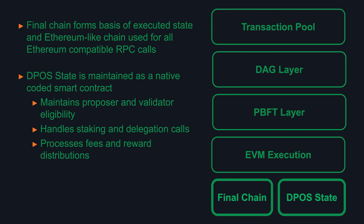Lastly, we produce a final chain and a DPoS state that we maintain. The final chain forms the basis of the executed state and it's an Ethereum-like chain, therefore usable for all Ethereum-compatible RPC calls to maintain overall Ethereum compatibility. The DPoS state is coded as a native smart contract — it maintains proposer and validator eligibility, handles all staking and delegation calls, and processes fees and reward distributions.